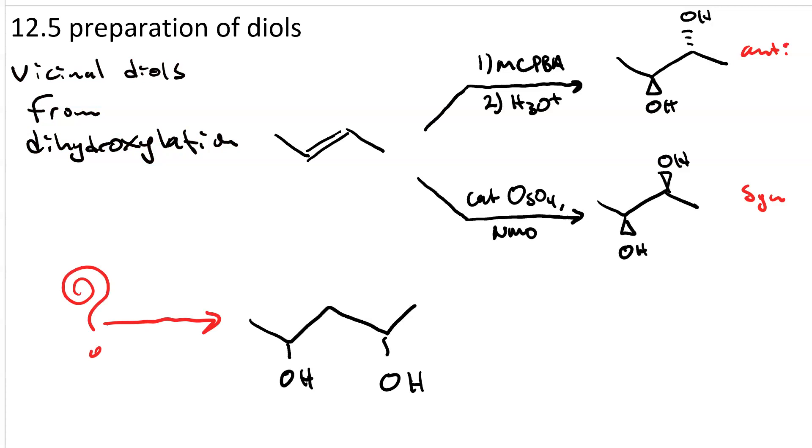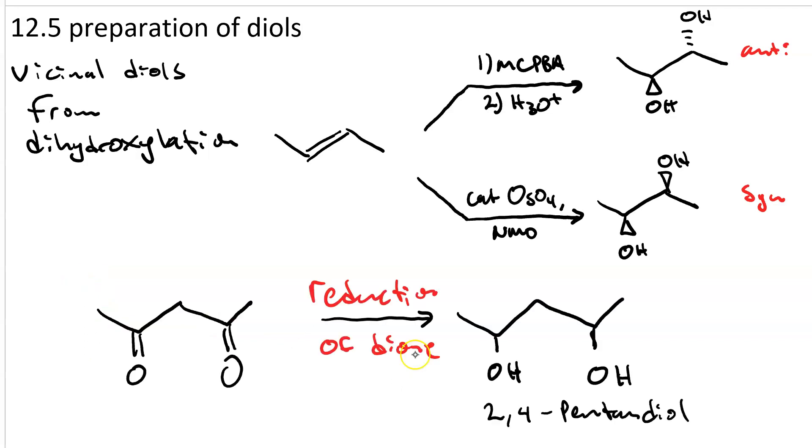For instance, what if we wanted 2,4-pentanediol? We could get this 2,4-pentanediol by reducing 2,4-pentanedione. And we could do this by catalytic hydrogenation: H2-Pt. Palladium or nickel would work as well.